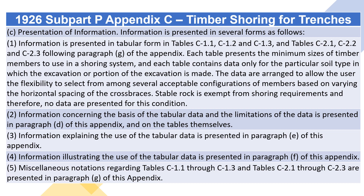C. Presentation of Information. Information is presented in several forms as follows. 1. Information is presented in tabular form in Tables C1.1, C1.2, and C1.3, and Tables C2.1, C2.2, and C2.3 following Paragraph G of the appendix. Each table presents the minimum sizes of timber members to use in a shoring system, and each table contains data only for the particular soil type in which the excavation or portion of the excavation is made. The data are arranged to allow the user the flexibility to select from among several acceptable configurations of members based on varying the horizontal spacing of the cross braces. Stable rock is exempt from shoring requirements and therefore no data are presented for this condition.